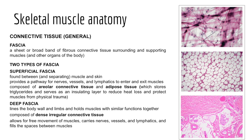Superficial fascia generally provides a pathway for nerves, blood vessels, or lymphatic vessels to enter and exit our skeletal muscles. In contrast, deep fascia lines the body wall and limbs and holds muscles with similar functions together, composed of dense irregular connective tissue. This allows for the free movement of muscles, carrying nerves, blood vessels, and lymphatic vessels, while also filling the spaces between muscles.